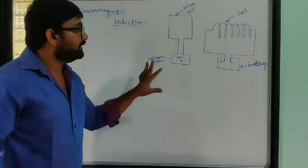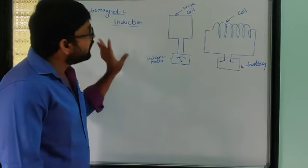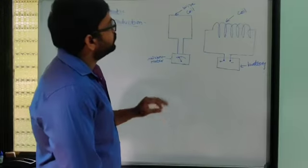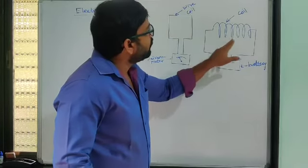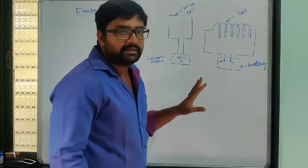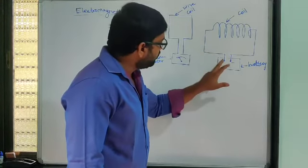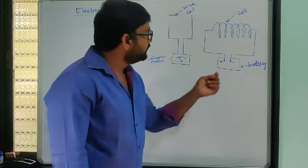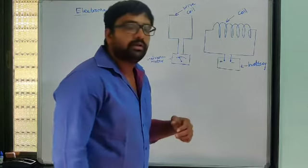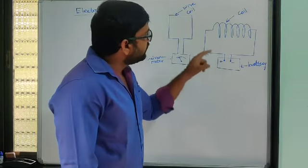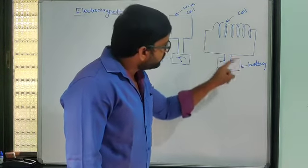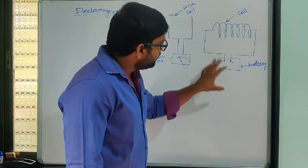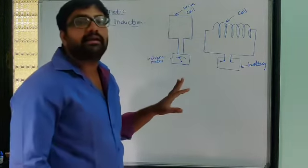I will again explain this topic slowly. One electrically conducting coil is connected to a battery, with positive and negative terminals. So electric current will pass through that coil.